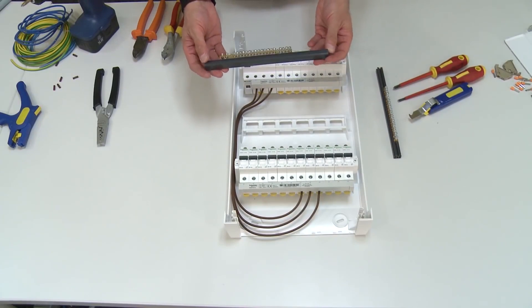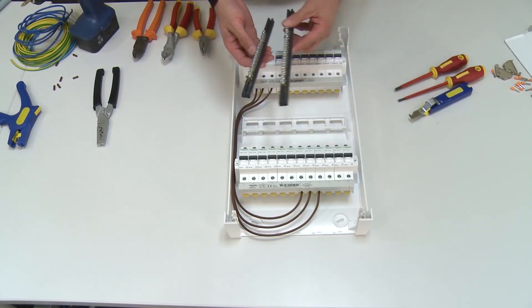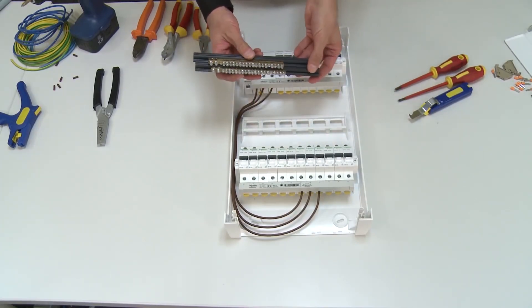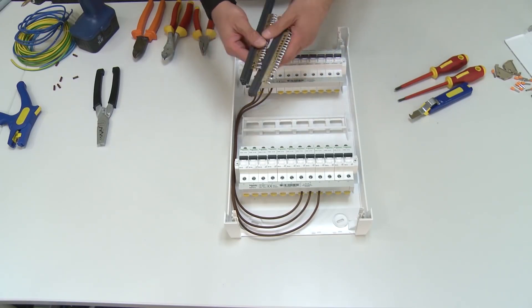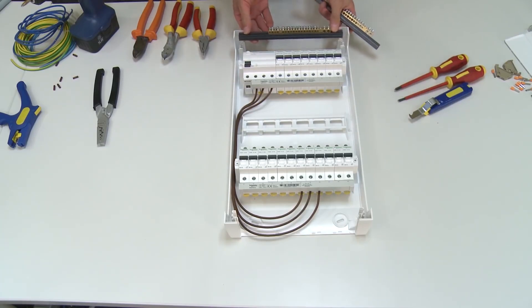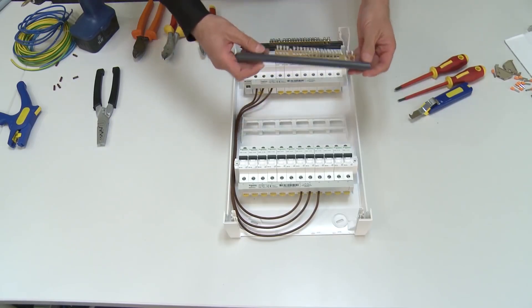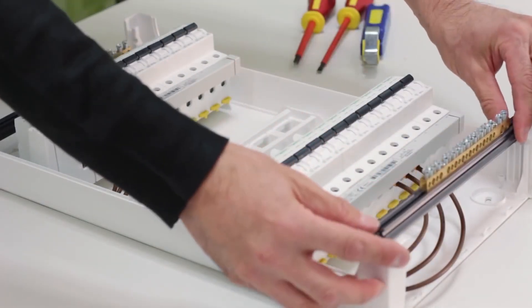The next thing we do is set up neutral and grounding bus bars. As for the production itself, they are identical bus bars and I place one in the bus bar area for neutral. And the other is a grounding bus bar.